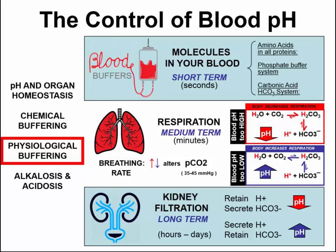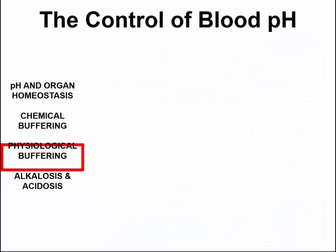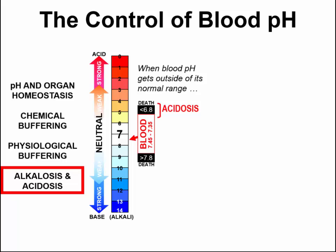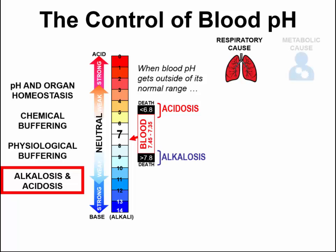So what happens when chemical buffering and physiological buffering still can't maintain normal blood pH? The answer is alkalosis or acidosis. Blood pH needs to be maintained within a range of 7.35 to 7.45, but when the blood gets outside of this normal range, it's referred to as either acidosis for a low pH below 7.35, or alkalosis for a high pH above 7.45. These can either be from a respiratory cause or a metabolic cause.